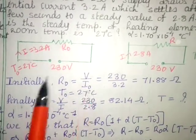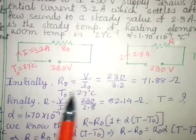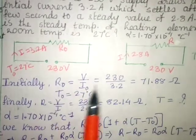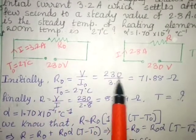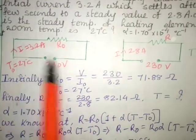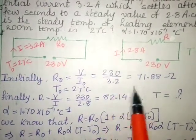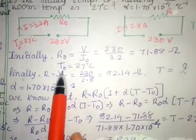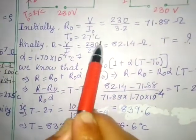So initially R0 is equal to V by I0. I am using Ohm's law, R equals V by I. But I want to use R0 and I0. Then V is given as 230 and I0 is the current initially 3.2. When you simplify you get 71.88 Ohm. And the temperature is given as 27 degrees Celsius.